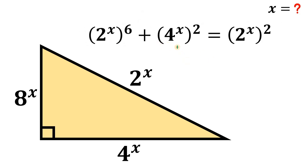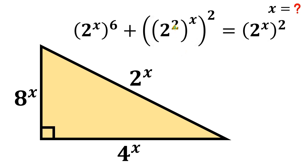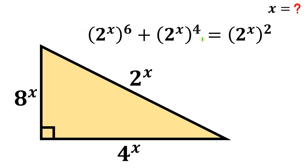We do the same for 4 raised to the power of x, raised to the power of 2. We rewrite 4 as 2 raised to the power of 2, then interchange the exponents x and 2. Using laws of exponents, we multiply the 2s, giving us 2 raised to the power of x, raised to the power of 4.